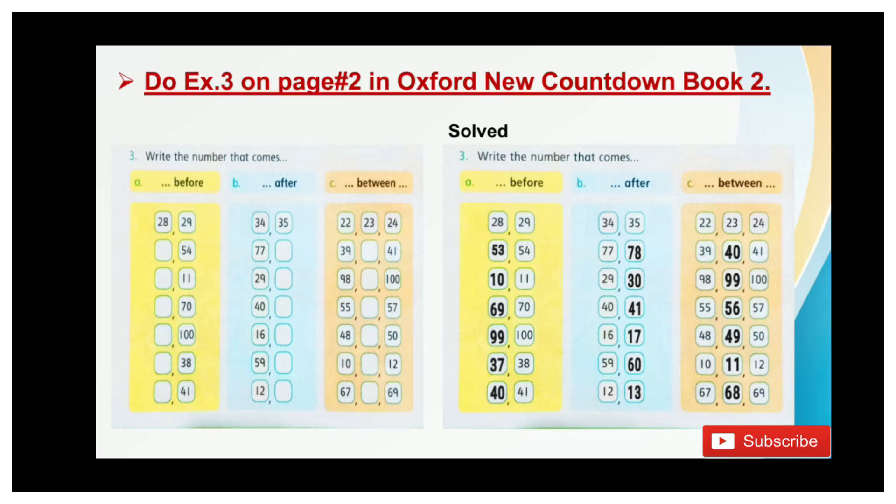Now start the after number. After numbers are those which come next to given number. What come after 77? It is 78. What come after 29? It is 30. What come after 40? It is 41. What comes after 16? It is 17. What comes after 59? It is 60. What come after 10? It is 13.